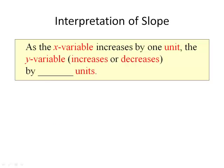The interpretation of slope is: as the x variable increases by one unit, the y variable either increases or decreases by a certain number of units. What fills in that blank is the absolute value of the slope coefficient. Whether the y variable increases or decreases depends on the sign of the slope — a positive sign means y is predicted to increase as x increases; a negative sign means y is predicted to decrease as x increases.